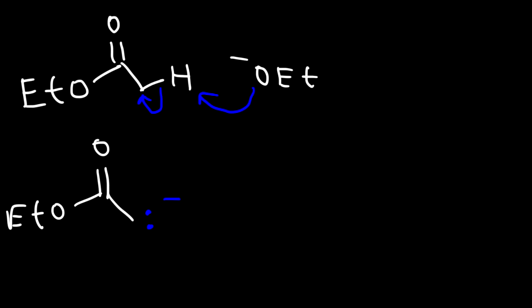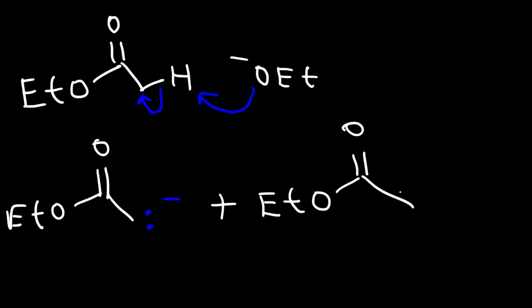Now this enolate ion is stabilized by resonance, but we're not going to focus on drawing a resonance structure. So now let's react the ester enolate with a neutral ester molecule. The carbon with a negative charge is going to attack the carbonyl carbon of the other ester, breaking a pi bond.